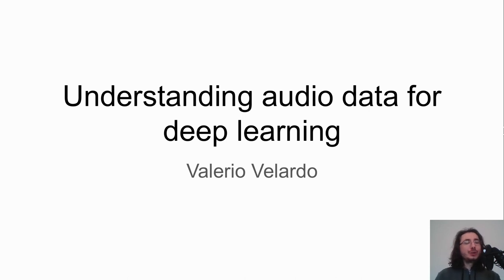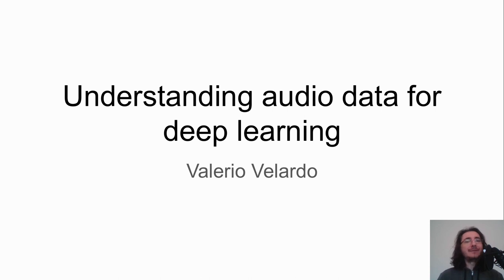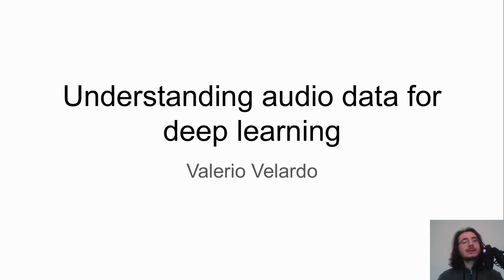Hi everybody and welcome to a new video in the Deep Learning for Audio with Python series. This time we're going to introduce basic concepts about audio data and signal processing. Specifically we're going to look into waveforms, sound, concepts like pitch, loudness, and things that are a little bit more advanced like spectrograms, Fourier transform and MFCCs — all of these elements are the basis we'll need for implementing audio and music deep learning models.